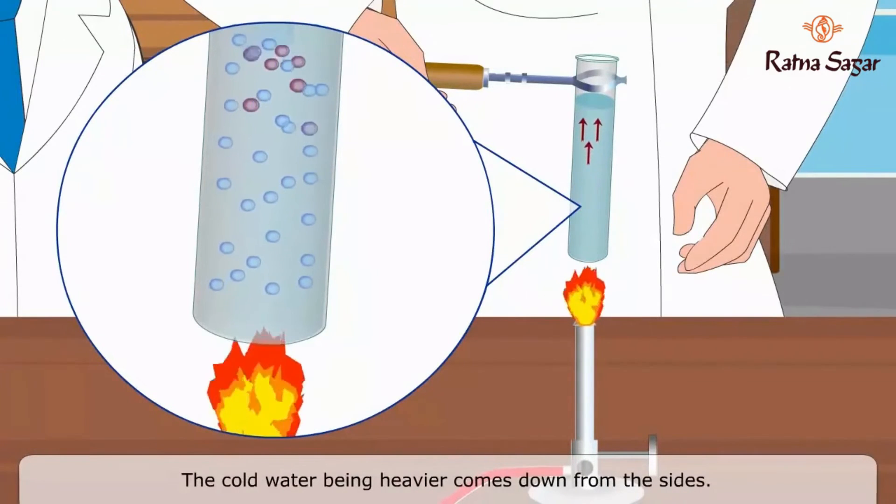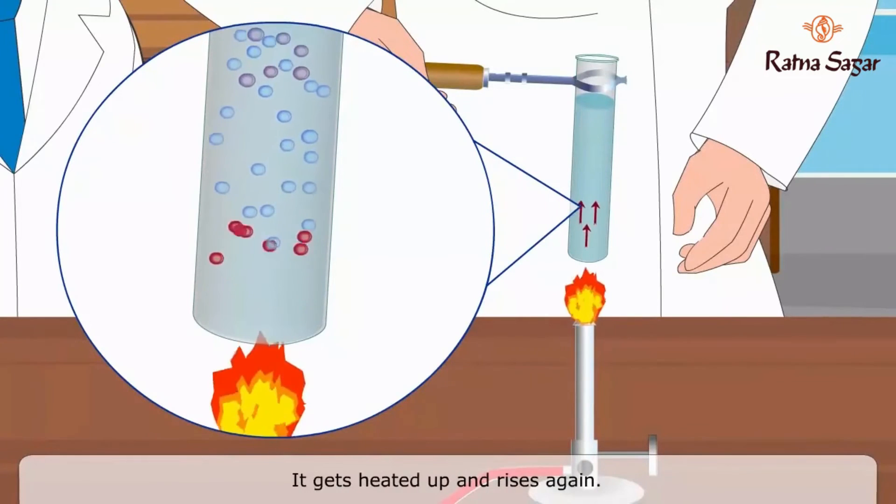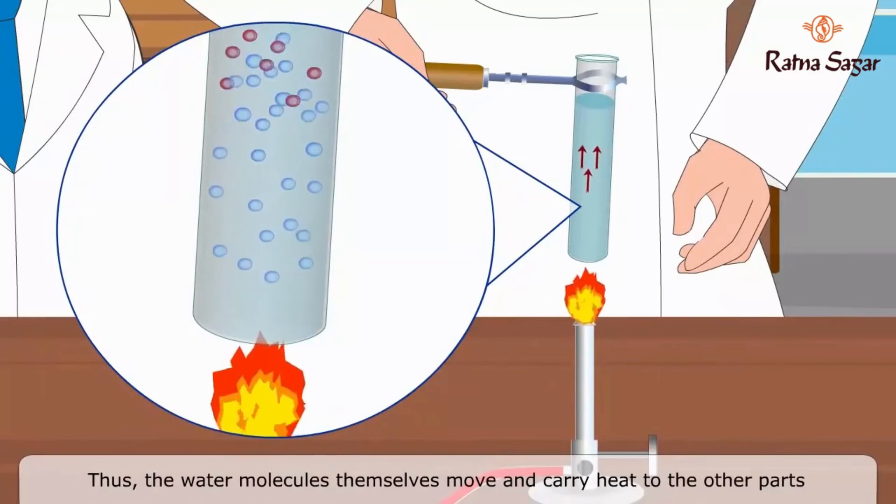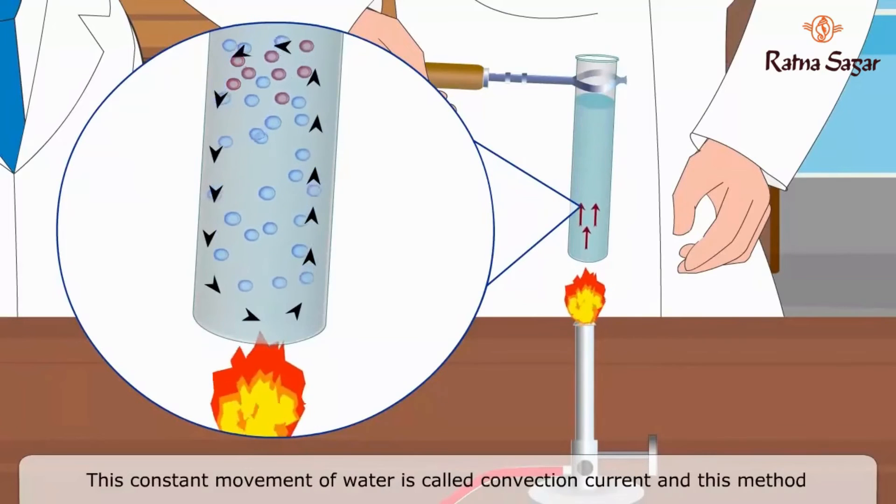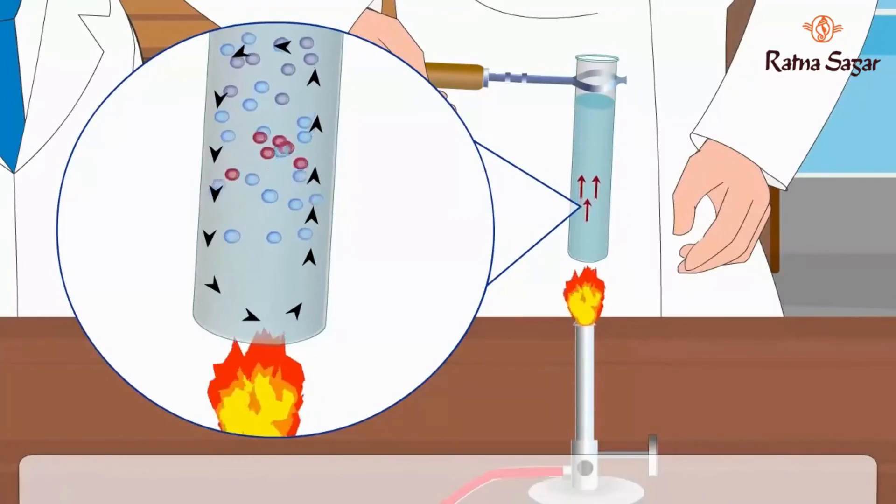The cold water being heavier comes down from the sides. It gets heated up and rises again. Thus, the water molecules themselves move and carry heat to the other parts of the water. This constant movement of water is called convection current and this method of transfer of heat is called convection.